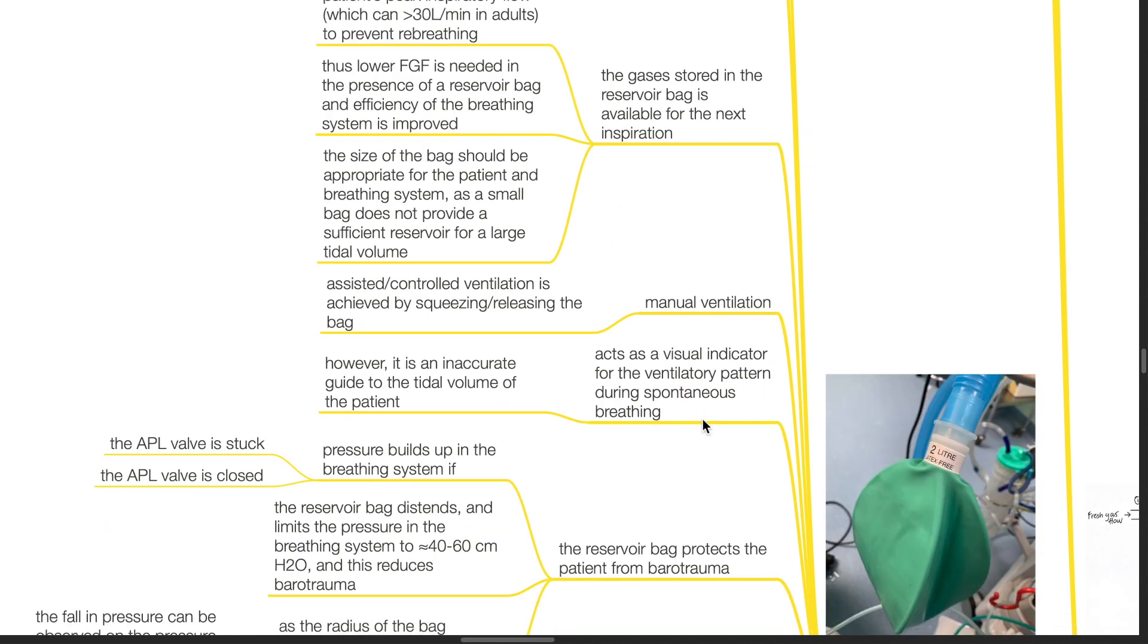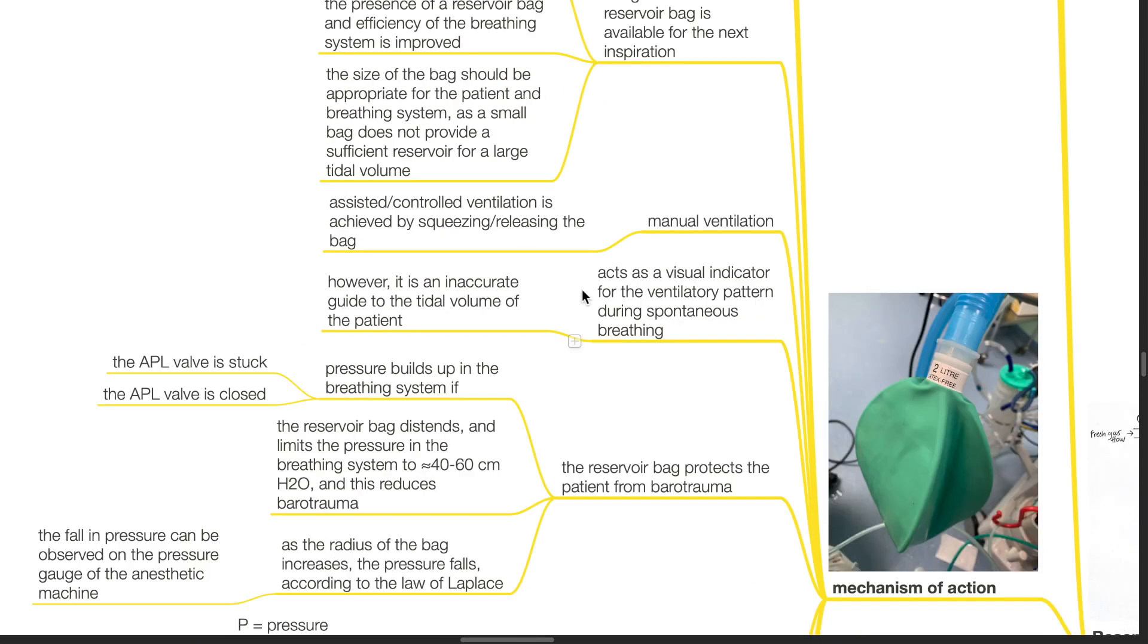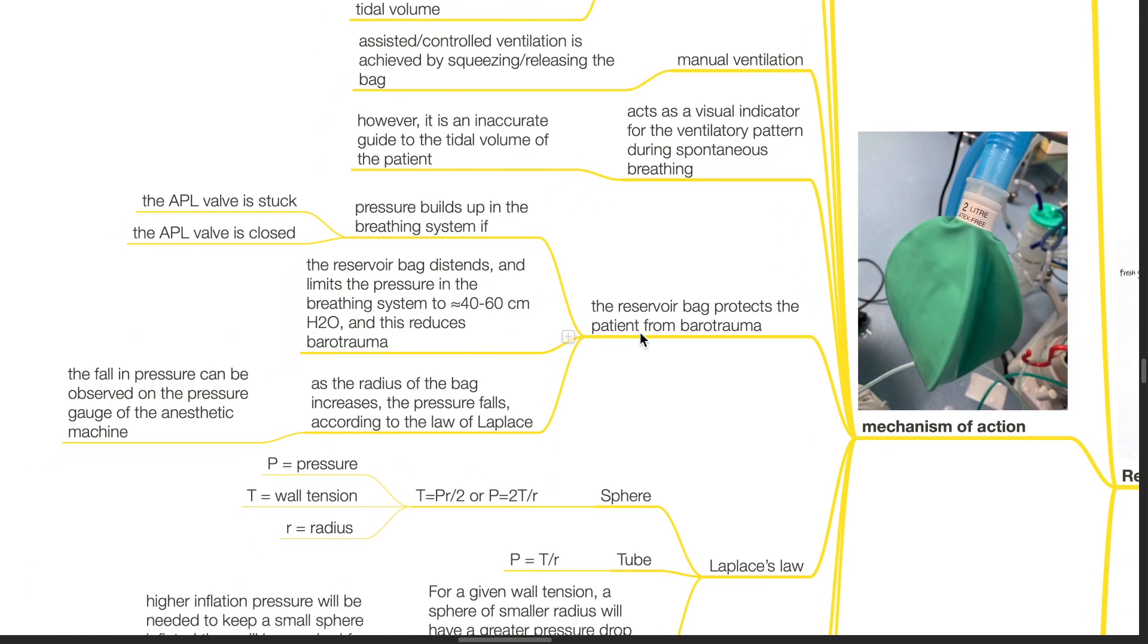For manual ventilation, assisted or controlled ventilation is achieved by squeezing and releasing the bag. The reservoir bag acts as a visual indicator for the ventilatory pattern during spontaneous breathing. However, it is an inaccurate guide to the tidal volume of the patient.